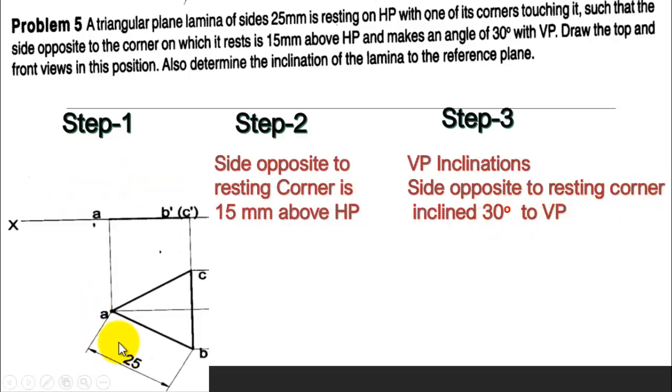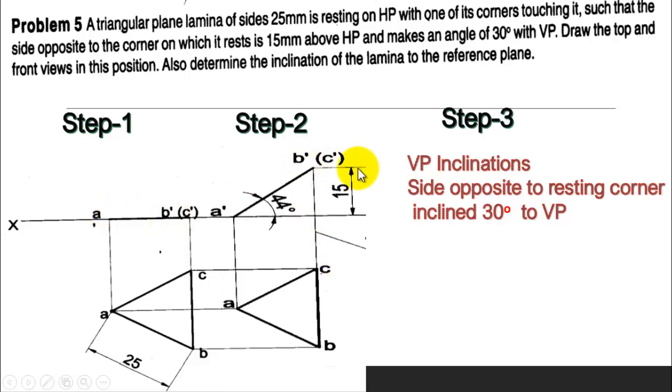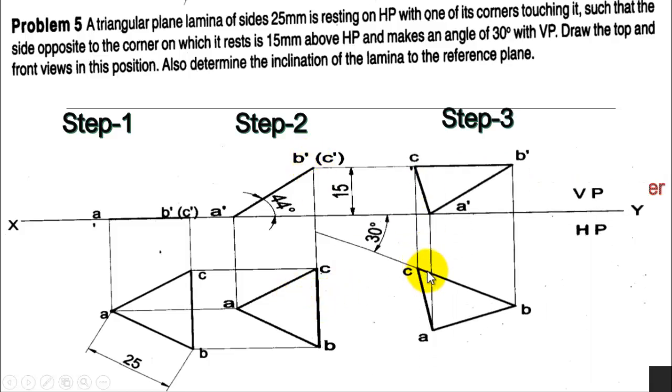Coming to the first step, we have to take the resting condition corner here, and here we have to get the front view. Then we have to take 15 mm above line and we have to place that line and get the top view. And the last step, we have to place the BC on the 30 degrees.